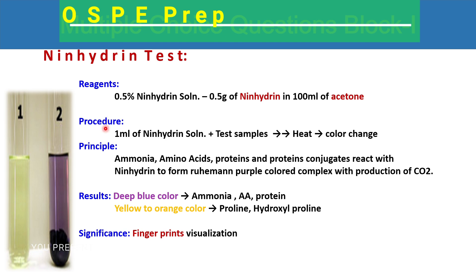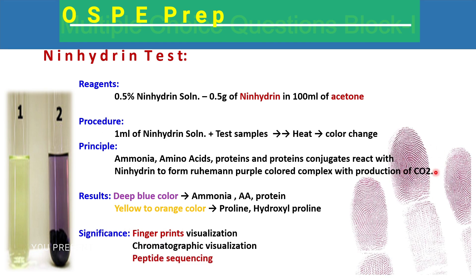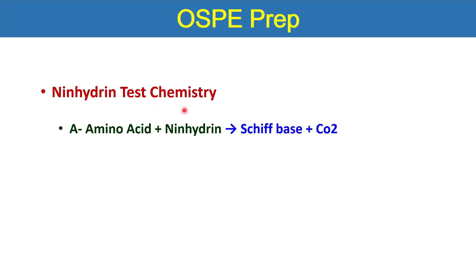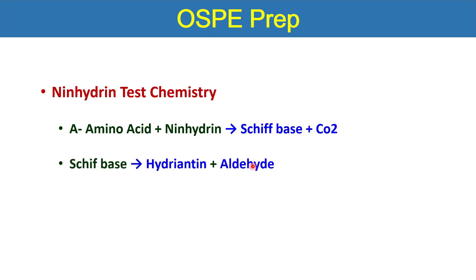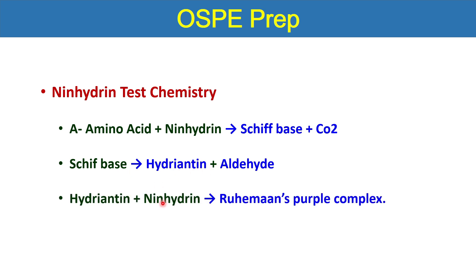The significance of this test: number one is fingerprint visualization, because proteins and peptones present in fingerprints can be visualized easily. It is also used for chromatographic visualization, peptide sequencing, and clinical importance — you can check the presence of proteins, peptides, or amino acids in any biological sample. The chemistry is that the amino acid reacts with ninhydrin to form a Schiff base along with production of carbon dioxide, which then produces the purple color.